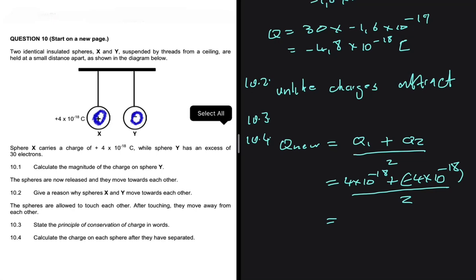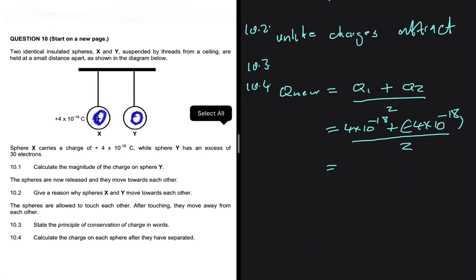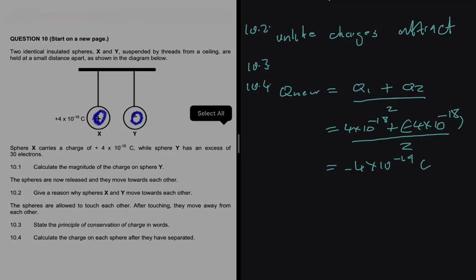Then if you go ahead and put that in your calculator, you're going to get a Q_new of minus 4 times 10 to the minus 19 coulombs.